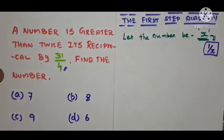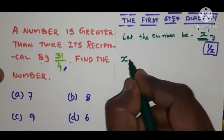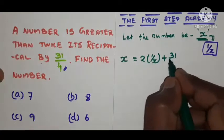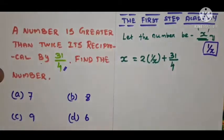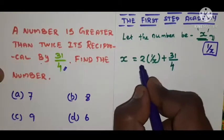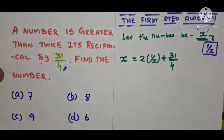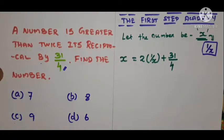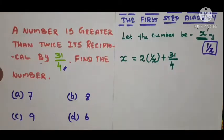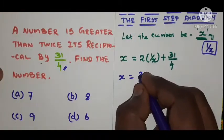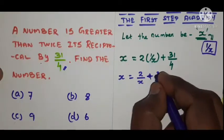How do we express these words into an expression? A number called x is greater than twice its reciprocal by 31/4. We found the expression: x is equal to 2 times 1/x, which is 2/x, plus 31/4.